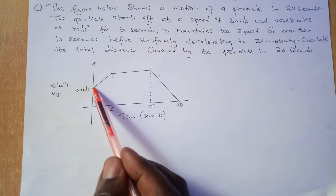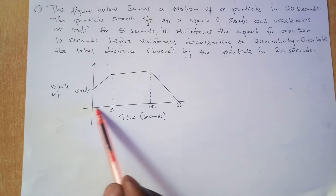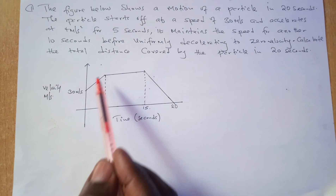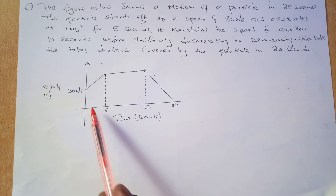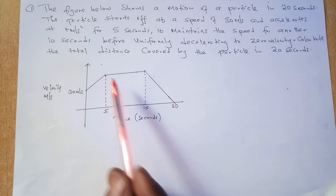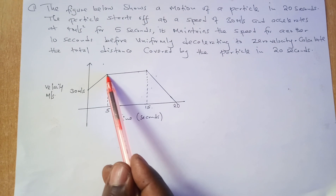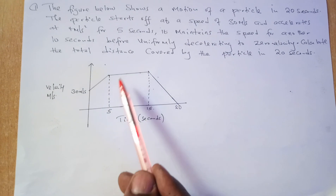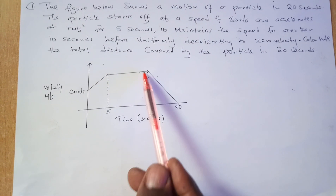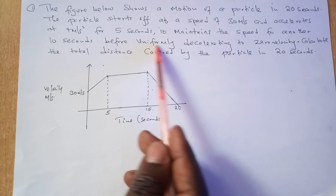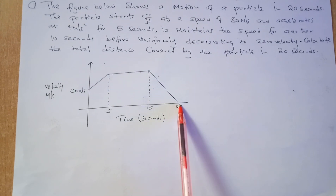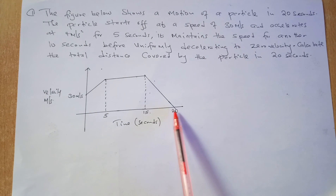They gave you the time but not the final velocity — that's something you need to work out. It then maintains this speed for another 10 seconds. A uniform velocity means zero acceleration. After that, it uniformly decelerates to zero velocity, and the whole motion took 20 seconds.